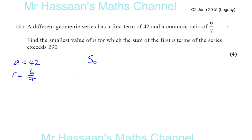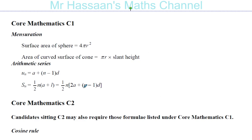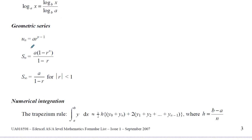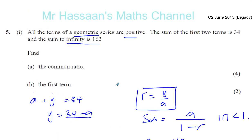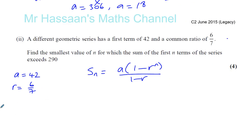So the sum of a geometric series — the sum for the first N terms is given by A times 1 minus R to the power of N over 1 minus R. Now, if the common ratio is less than 1, it's best to use that form. This is a formula given to us in the formula book for C2: A(1 minus R to the power N) over (1 minus R).